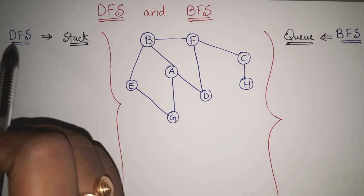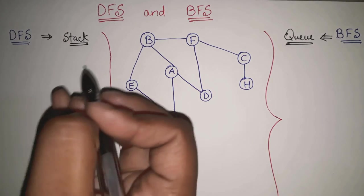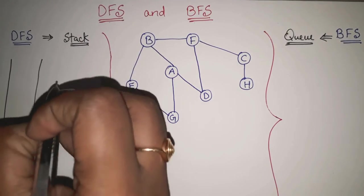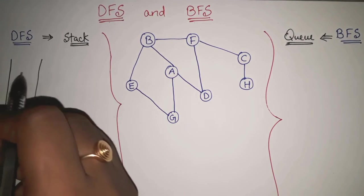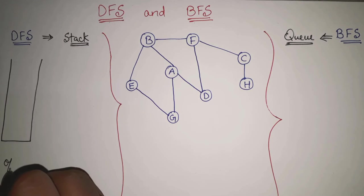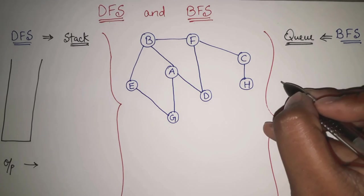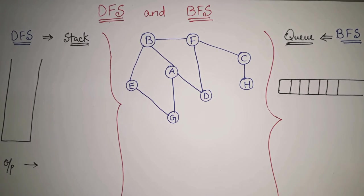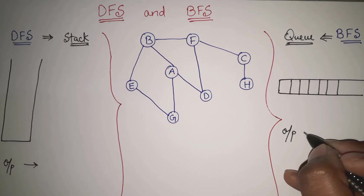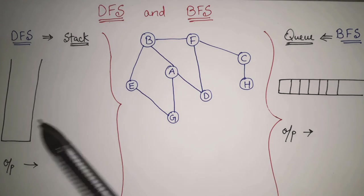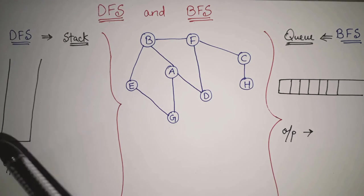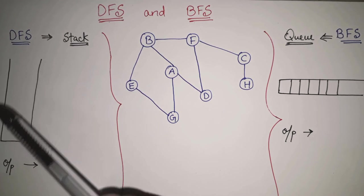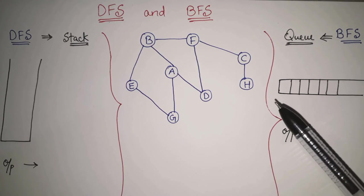First of all, DFS. As we know in DFS traversal, we will be using a stack. We are making one stack here. What we will do for DFS is we will maintain one stack and we will maintain one output. Similarly, for BFS, we will maintain one queue and one output. I am showing you both together so that you won't be confused — we can clearly see the difference between these two. For DFS, you maintain one stack and one output; for BFS, you maintain one queue and one output.